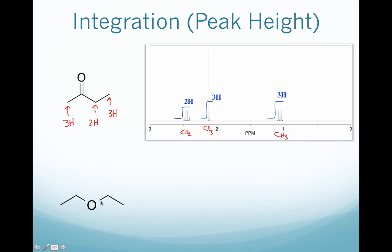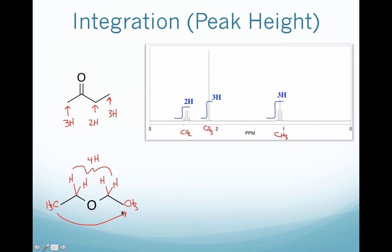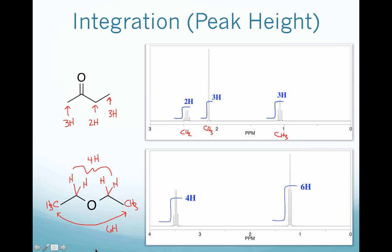Next we have a symmetric ether. Here we have equivalent CH3 groups on both sides, so that's going to give one signal. And we have equivalent CH2 groups. So our integration here is going to be for a total of 4 hydrogen. And for these methyls, since they are equivalent, we're going to get an integration for 6 hydrogen. And that is in fact what we have in this spectrum.